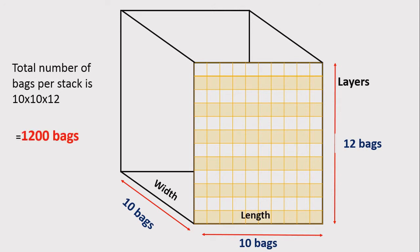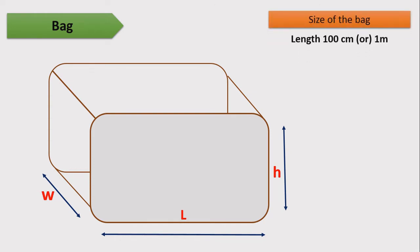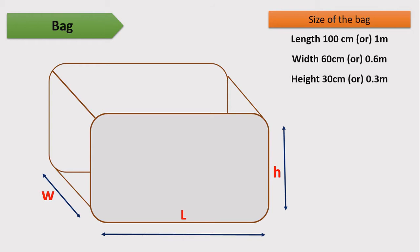Each stack capacity is 1200 bags. Each bag also has width, length, and height, and we normally place bags on the length side for easy handling. The measurements for the size of the bag are: length 100 cm or 1 meter, width 60 cm or 0.6 meters, and height 30 cm or 0.3 meters. These are the ideal measurements for the size of the bag.